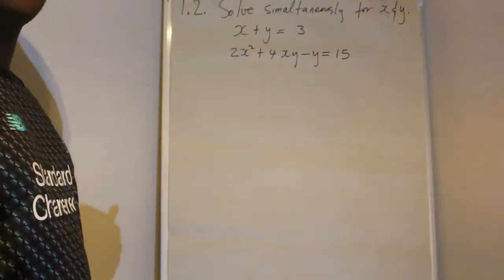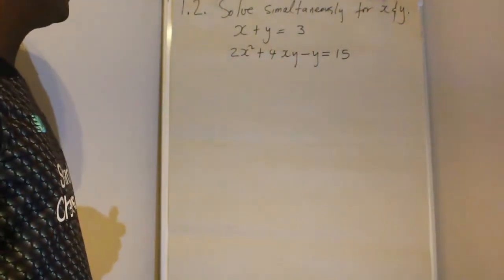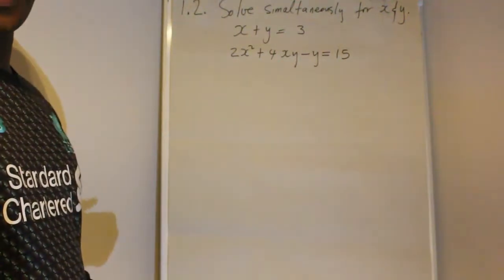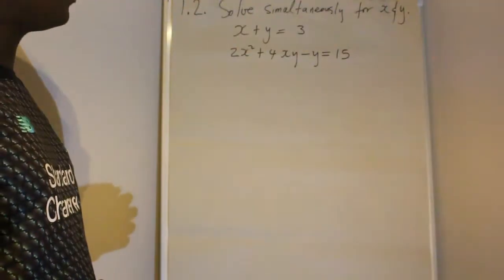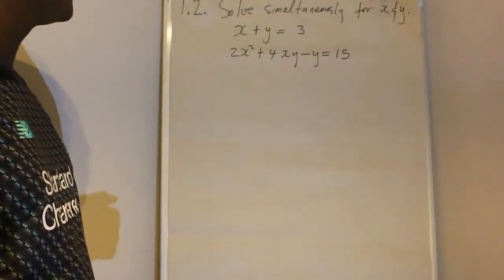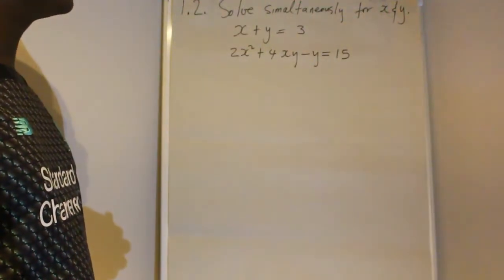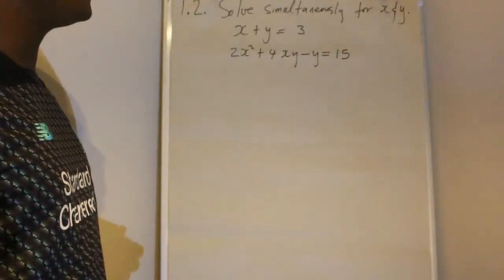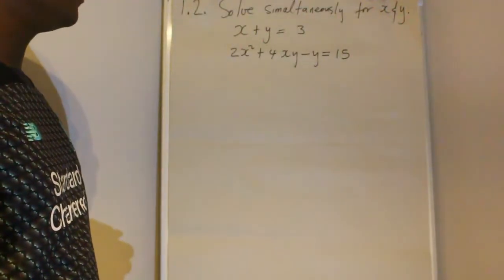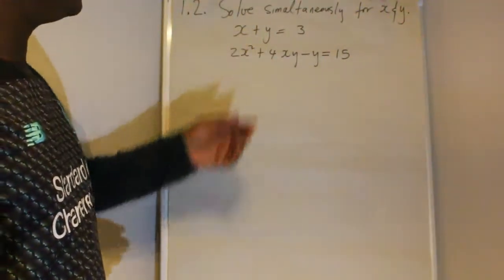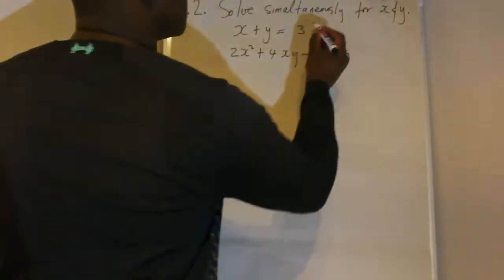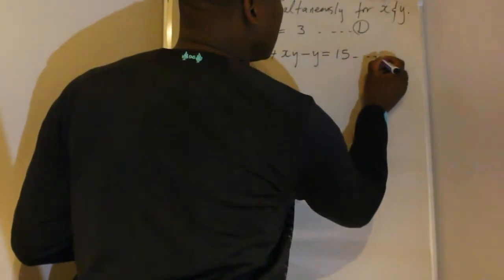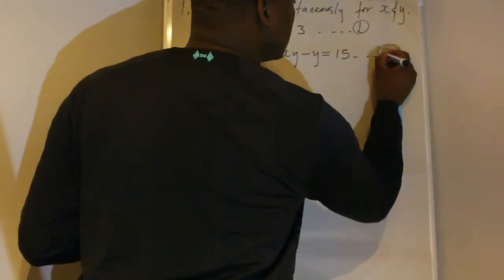Hello, let's continue with question 1.9.1 and 1.2. They are saying solve simultaneously for x and y. So we are given these two equations. We label this equation 1 and equation 2.